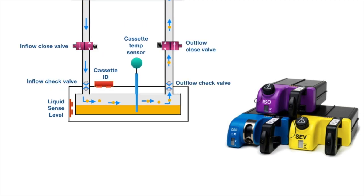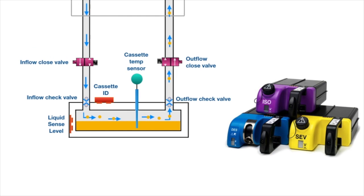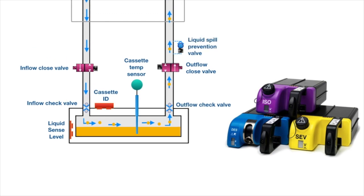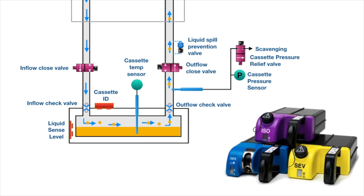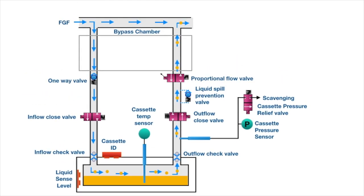There is no risk of agent spilling if the cassette is tilted, as the inlet valve will close preventing any spillage. There is also a liquid spill prevention valve that prevents the anesthetic liquid in the vaporizing chamber from entering the fresh gas line. The Aladdin cassette also has a pressure relief valve — a safety valve that opens whenever the pressure inside the cassette is greater than 2.5 bar.